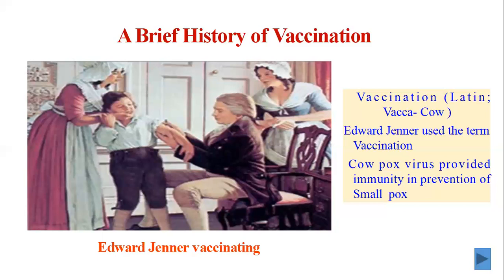Vaccination is a Latin word derived from the word for cow. Edward Jenner used this term vaccination because cowpox virus provided immunity in the prevention of smallpox. In 1796, Jenner deliberately inoculated people with small doses of cowpox — that is, vaccinia virus — from pustules, and successfully demonstrated that protection against smallpox could be achieved. Jenner termed this preventive procedure vaccination.